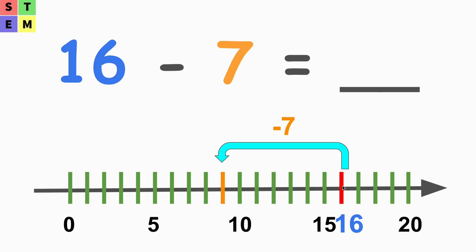16, so count backwards from 16: 1, 2, 3, 4, 5, 6, 7. That's where we ended with minus 7, which is 9.